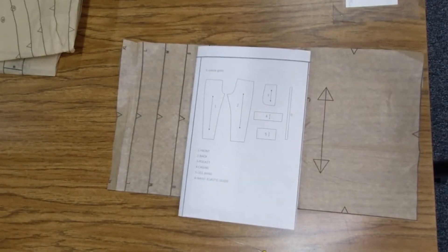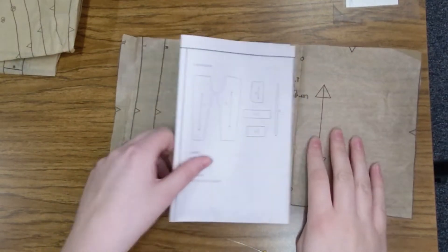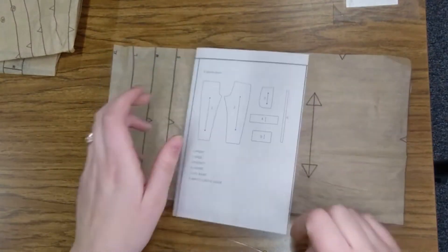Another thing is piece three. Right here, our pocket, you're going to have to cut four of piece three. So, everything else is cut two, like this one, but you're going to have to cut four of that one. You're going to have to lay it out twice.